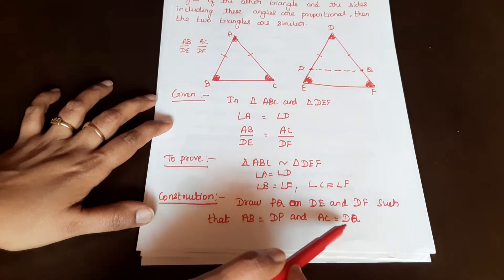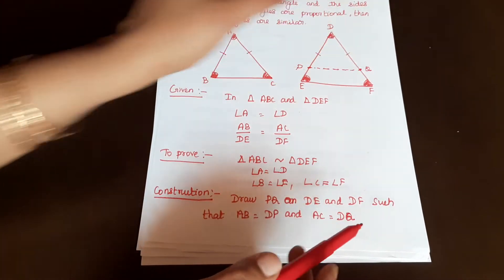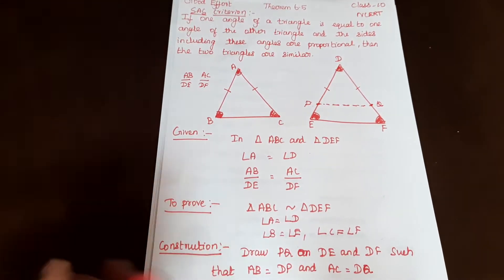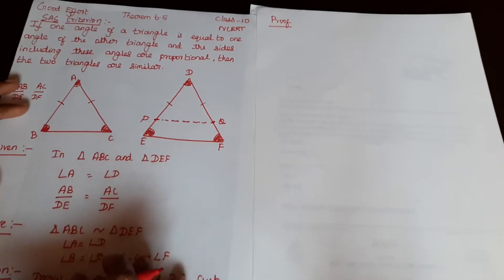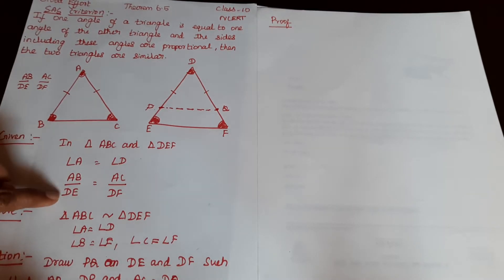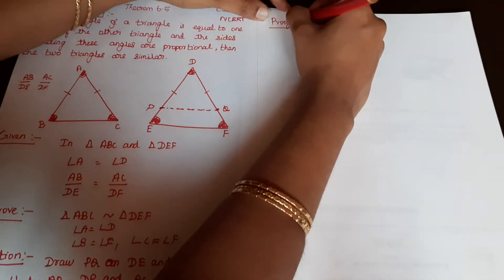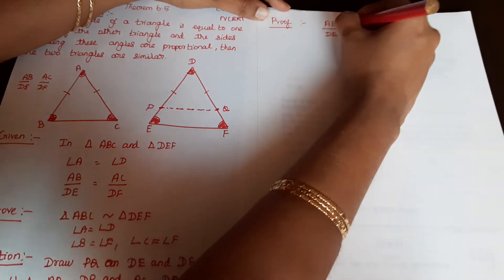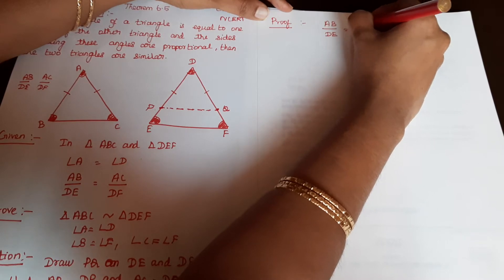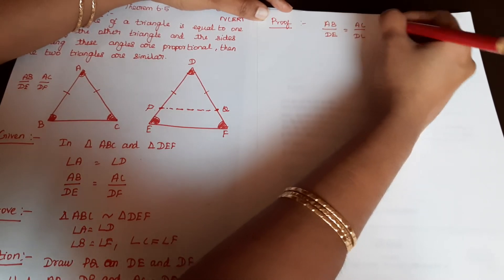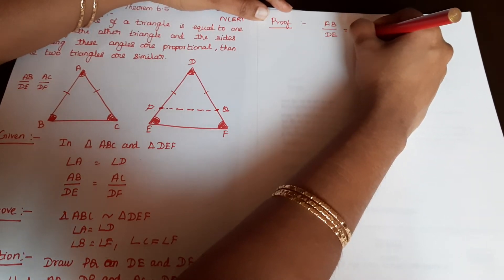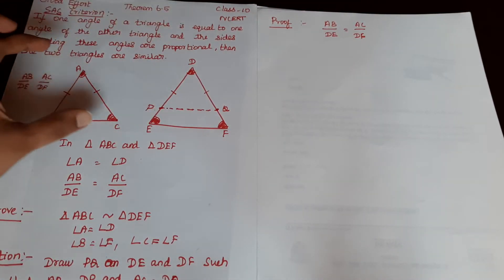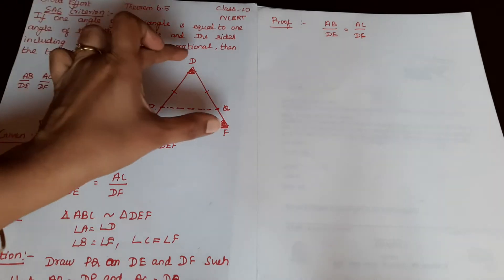So AB is equal to DP and AC is equal to DQ. Now in the proof, we use the given proportional sides: AB by DE is equal to AC by DF.